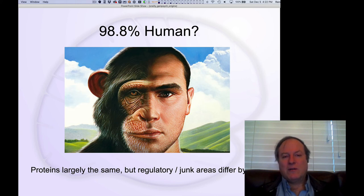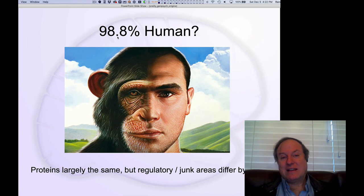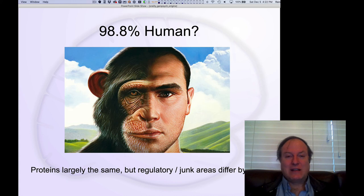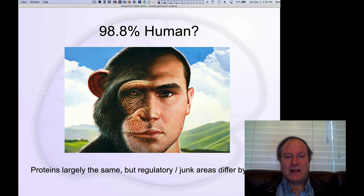We now know, for example, that chimpanzees and people share 98.8% of those base pairs in common. So we are incredibly closely related to our nearest primate relatives in the great family tree. That's staggering — we are really, really close, with only a 1.2% difference.